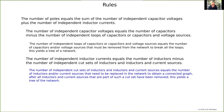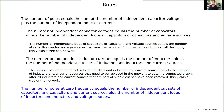After all elements of those cut sets have been removed, the number of poles at zero frequency equals the number of independent cut sets of capacitors and capacitors and current sources, plus the number of independent loops of inductors and inductors and voltage sources. We've already defined what independent loops and independent cut sets are.